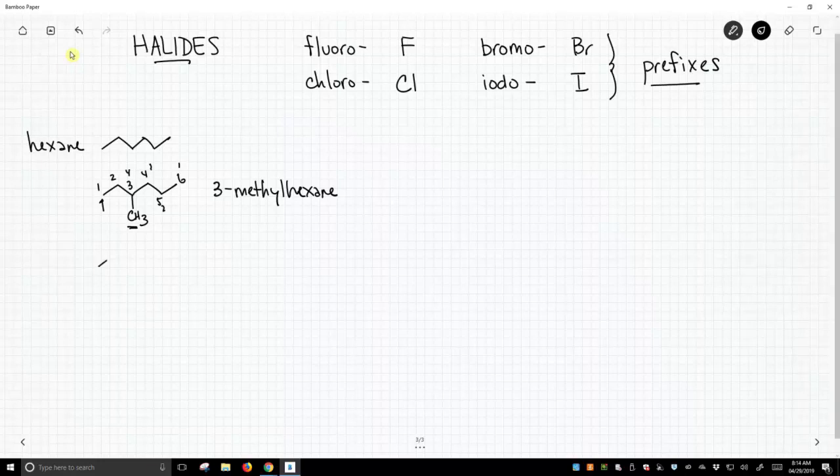So what does this have to do with halides? Well, what if we had a bromine there instead of a methyl? We don't have a methyl as a substituent. We have a bromine as a substituent, as a bromo. So we just say 3-bromohexane.